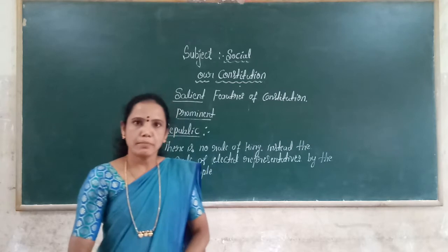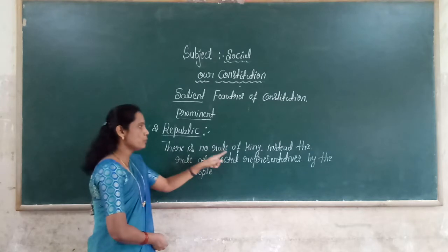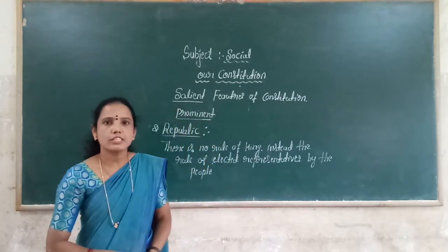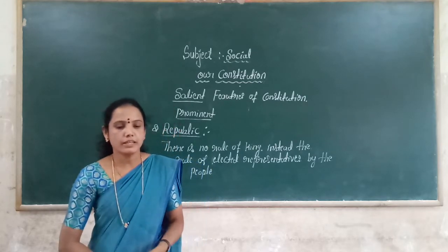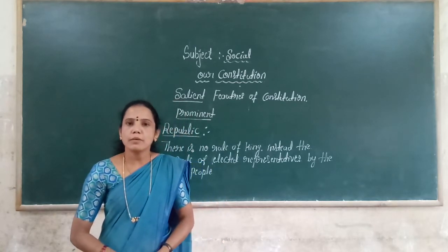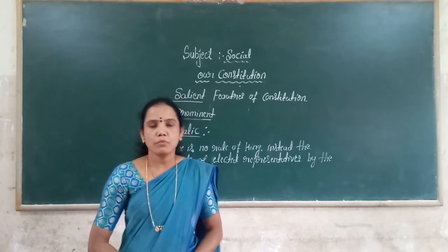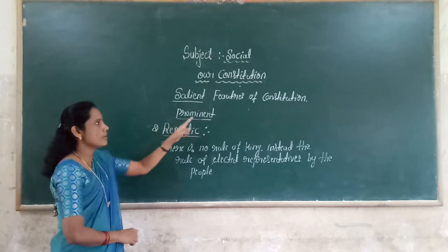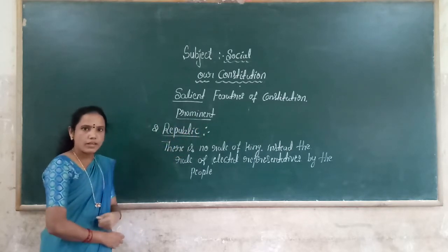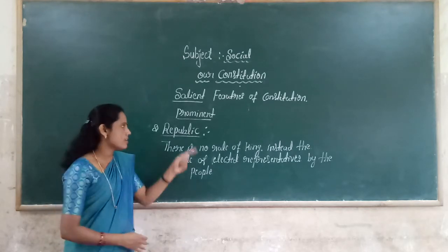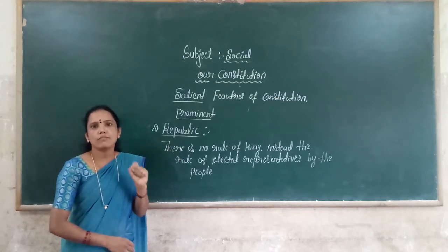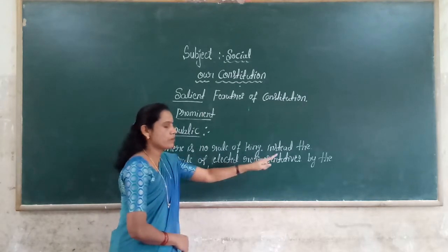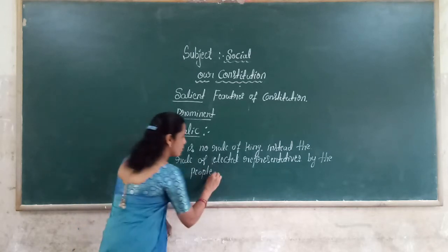What is the meaning of republic? There is no rule of king. Instead, the rule of elected representatives by the people. This is called republic. India has the kind of political system known as the democratic republic. Our constitution has declared our country as a republic country — very, very important.